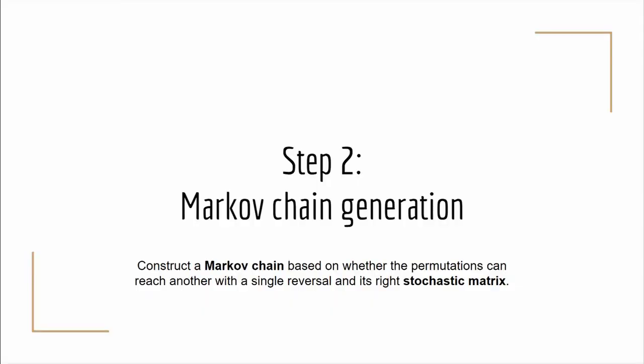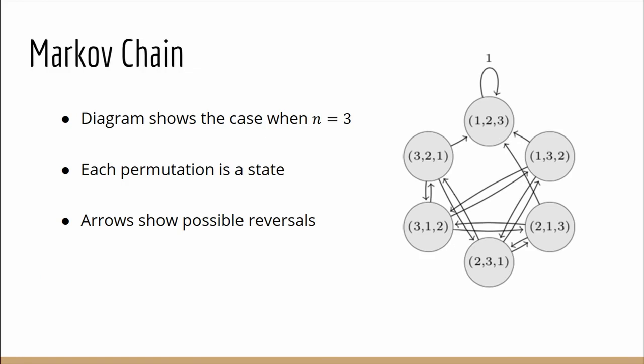With that we can now move on to generate the Markov chain. Here's the Markov chain when n equals 3. Each of the permutations is a state and the arrows show the possible actions on it or the reversals for most of them. The remaining arrows should be labeled a third but have been omitted.